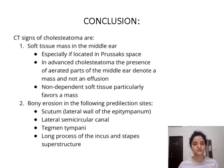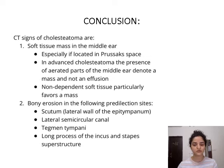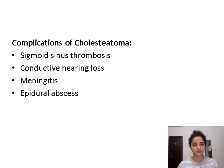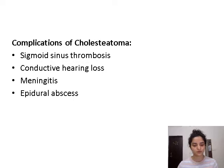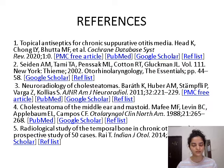Conclusion: The CT signs of cholesteatoma are soft tissue masses in particular places in the middle ear, mainly the Prussak's space, and bony erosions at the scutum, lateral semicircular canals, tegmen tympani, and long process of incus. Complications of cholesteatoma can include sigmoid sinus thrombosis, conductive hearing loss, meningitis, and effusion.